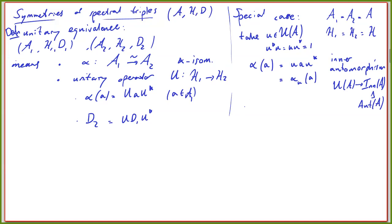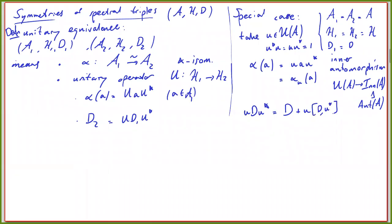What happens to D? Starting with D₁ = D, let's see what D₂ = U D U* is. It's not necessary that U commutes with D — there's no reason to expect that. Since U is unitary, we can write U D U* = D + U[D, U*], and this is actually a bounded perturbation of D, because by assumption the commutators [D, a] extend to bounded operators.